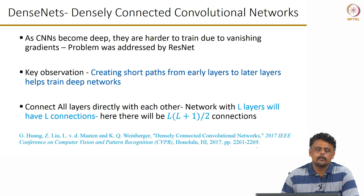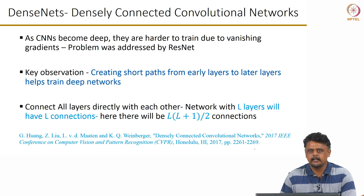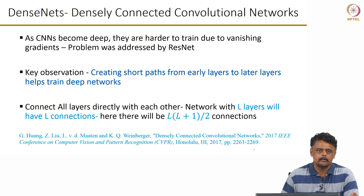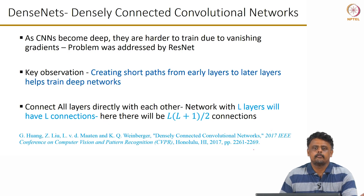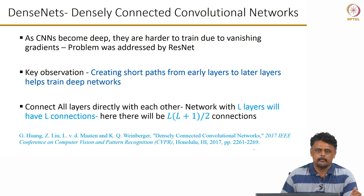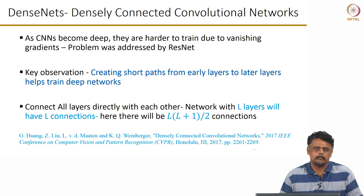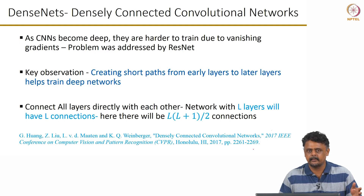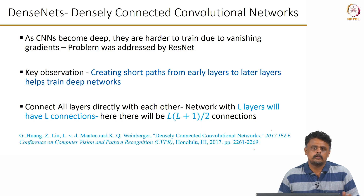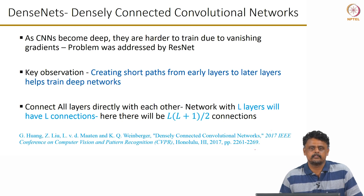Just as we saw with ResNet, as the CNN became deeper it became harder to train because the gradients began to vanish. This problem was addressed by ResNet by adding feature maps from previous layers by skipping a layer and adding them to the next. The key observation is that by creating short paths from the early layers closer to the input to the later layers closer to the output, gradient propagation is improved and so is classification.